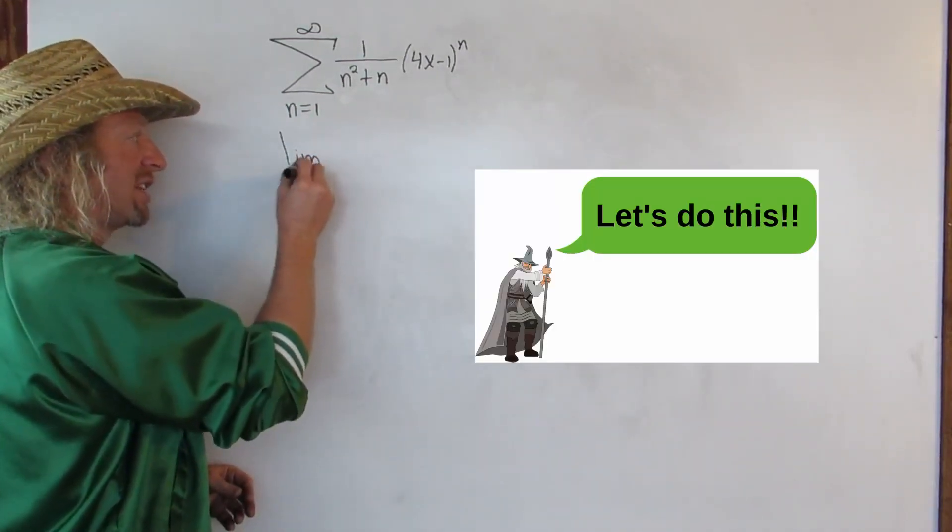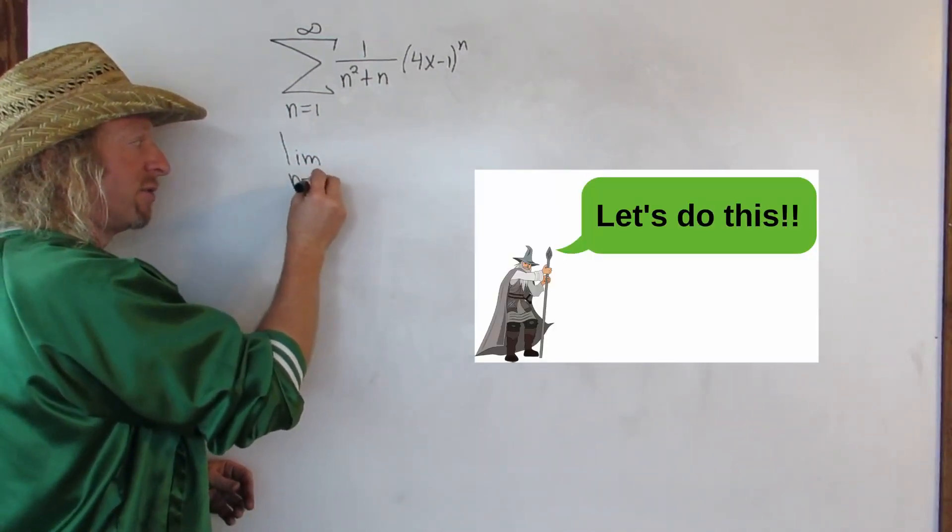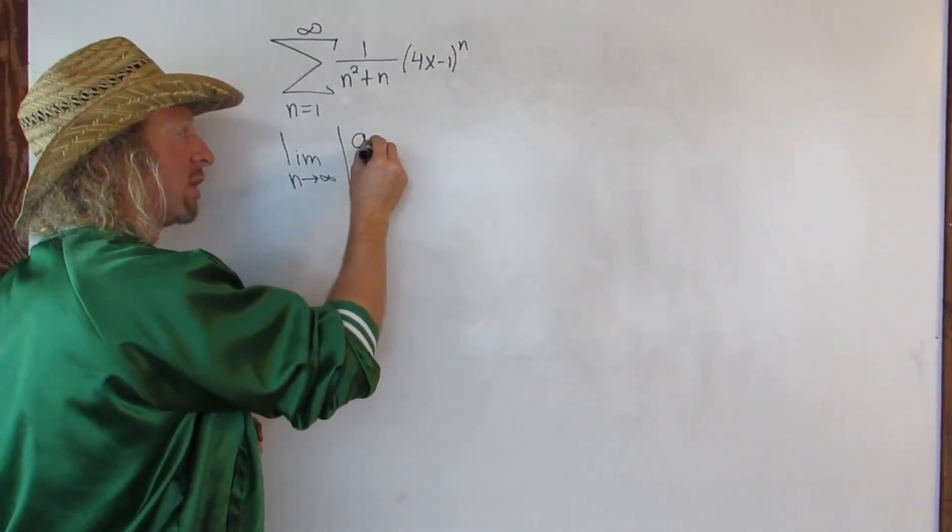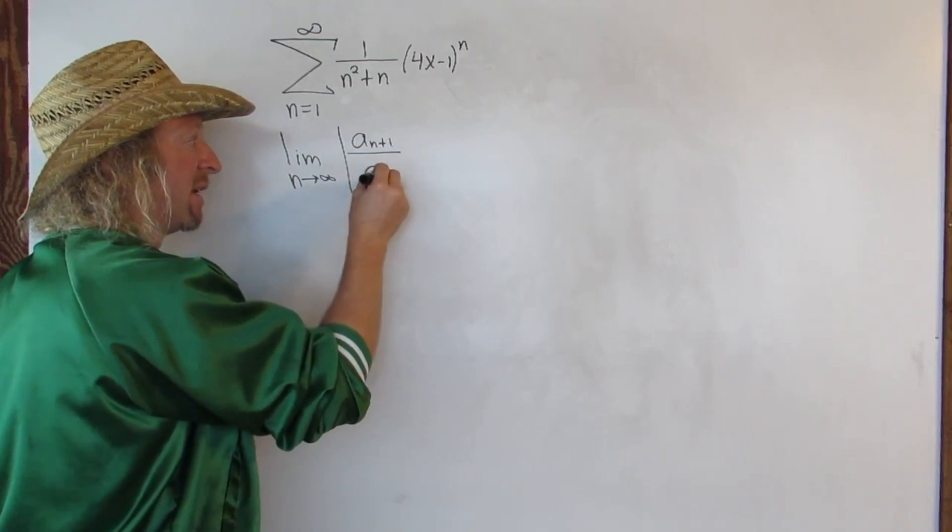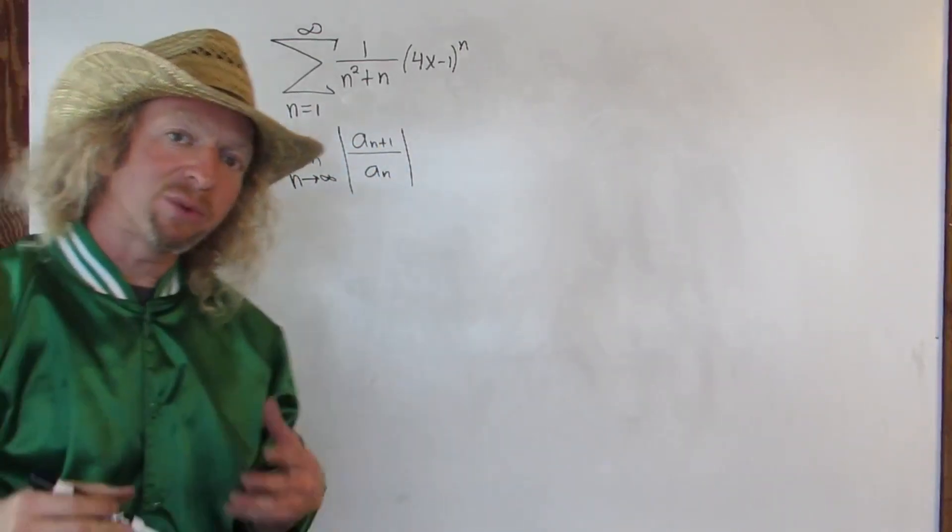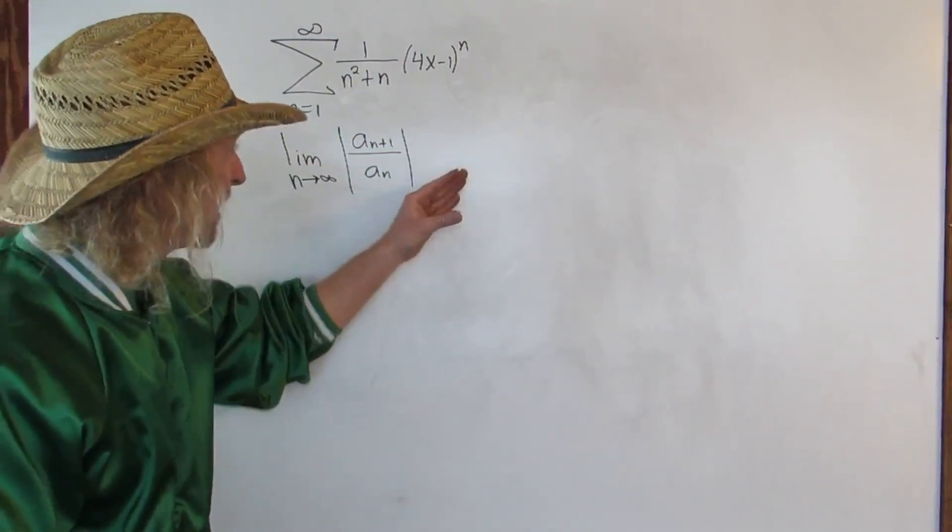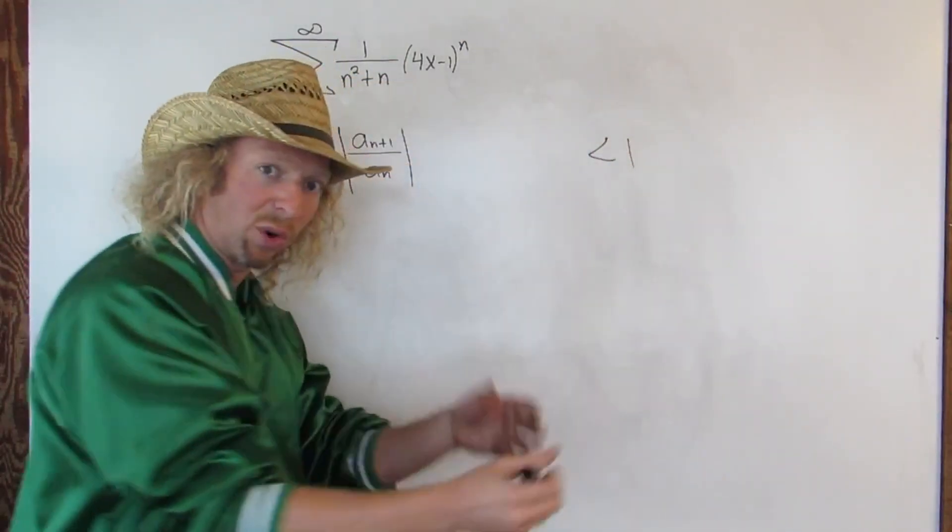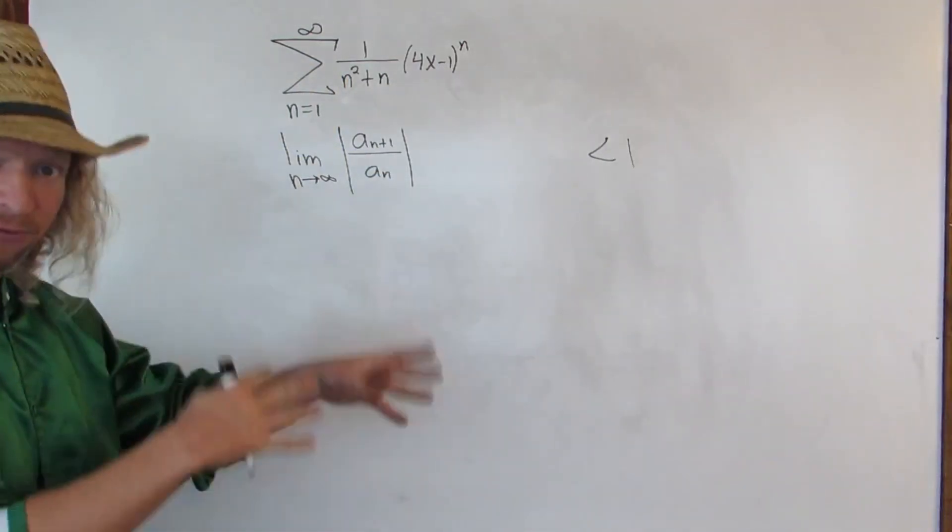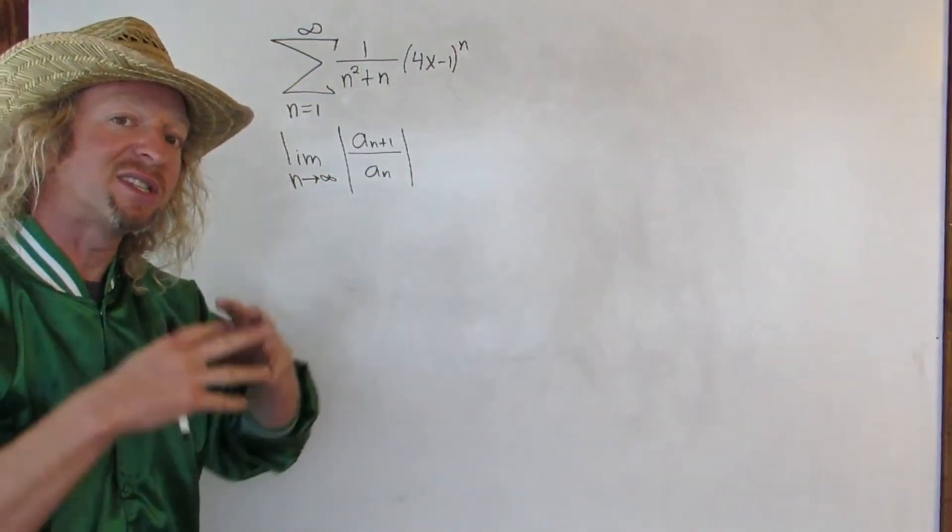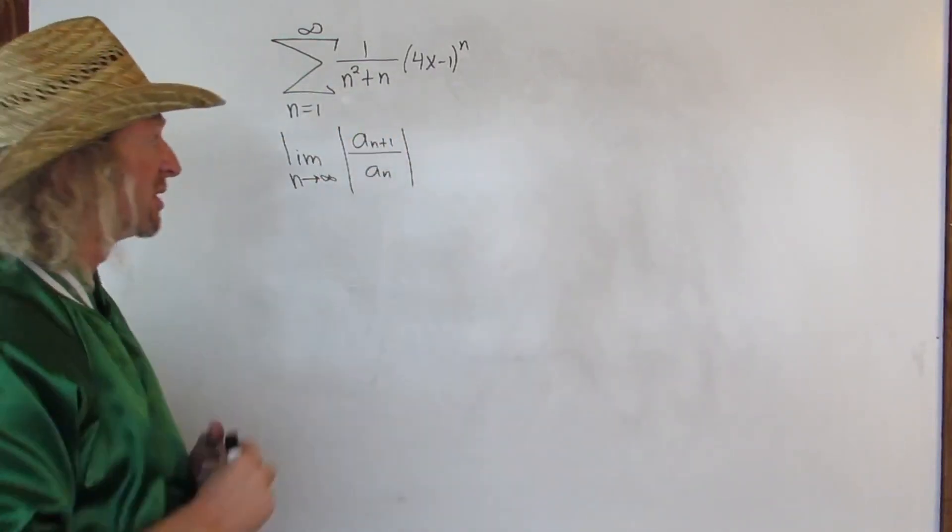So the ratio test says if you take the limit as n goes to infinity of the absolute value of a sub n plus 1 over a sub n, and if this limit is less than 1, then we get what's called absolute convergence. So what we do is we take this limit and then we set it less than 1. We force it. And then from there we solve for the interval of convergence. The interval of convergence is the set of all x's for which the series converges.